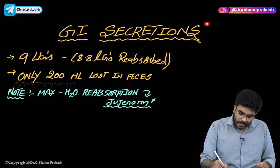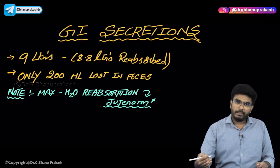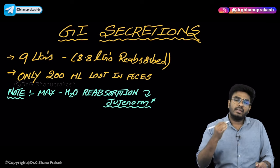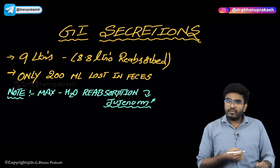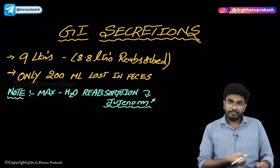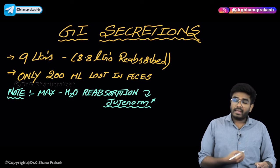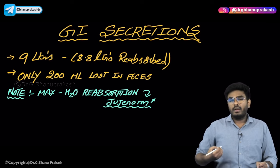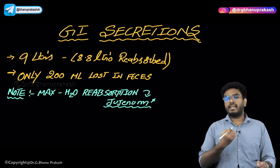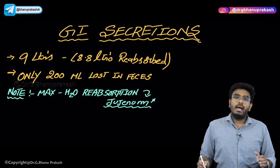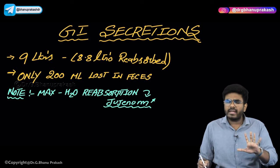Now let's discuss GI secretions. In your entire GI tract there are many secretions being produced. Starting from the mouth we have saliva. There are gastric secretions in your stomach including acid. The liver produces bile. The pancreas produces pancreatic secretions. And the intestines produce succus entericus or intestinal juice. There are also mucus and alkaline secretions produced in the duodenum.